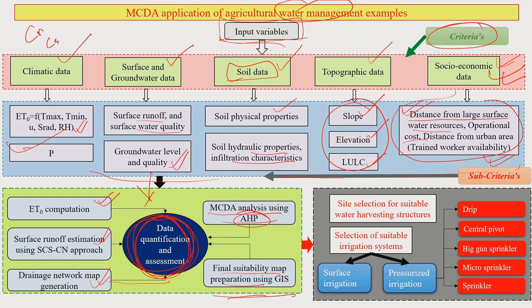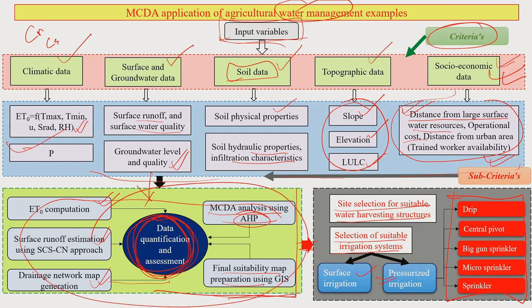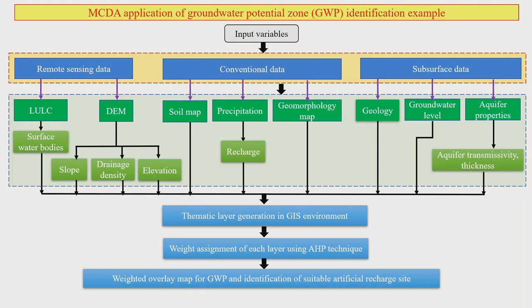Once your MCDA analysis is completed and the GIS map is created, the decision is ready in the form of representable GIS maps. This leads to site selection for suitable water harvesting structures — deciding which location should have a water harvesting structure — and selection of the suitable irrigation system. Your MCDA analysis helps you choose one of the available irrigation options, since we cannot go for all options simultaneously. The role of MCDA is to reduce the complexity of choosing among alternatives.